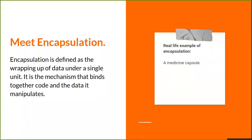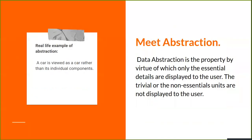Next, let's meet encapsulation. Encapsulation is defined as the wrapping of data under a single unit. It is the mechanism that binds together code and the data it manipulates. An example would be a medicine capsule — just like the outer cover of the capsule binds together all the droplets of medicine inside. Another way to think about encapsulation is as a protective shield that prevents data from being accessed by code outside the shield.